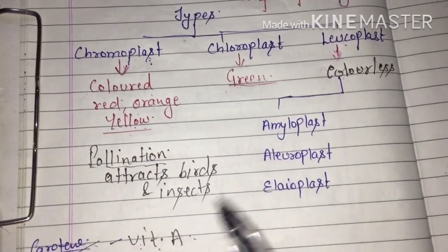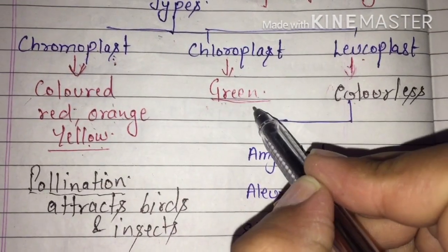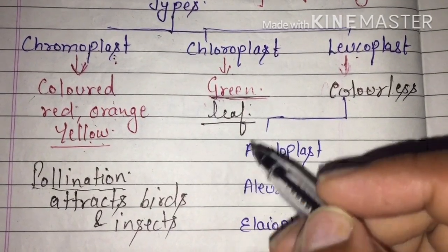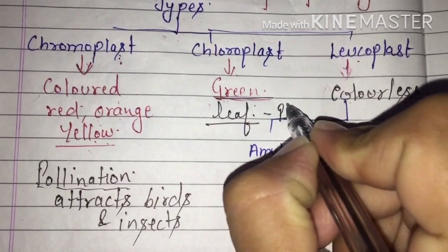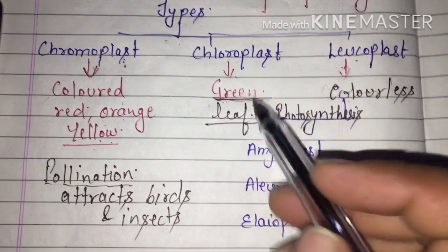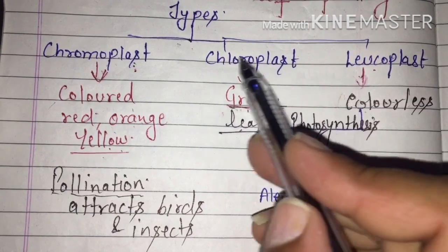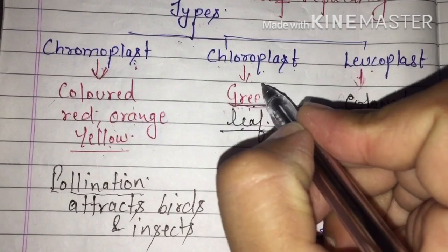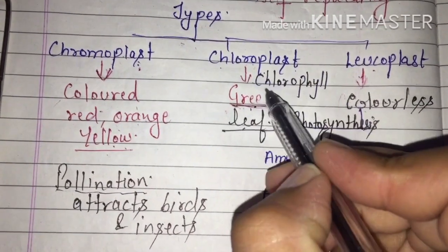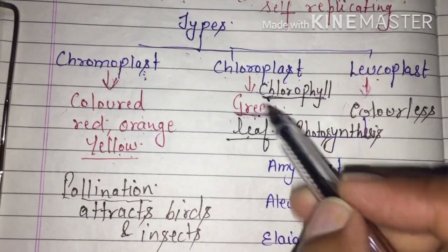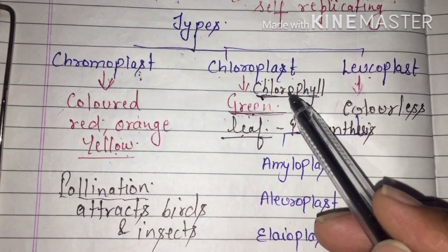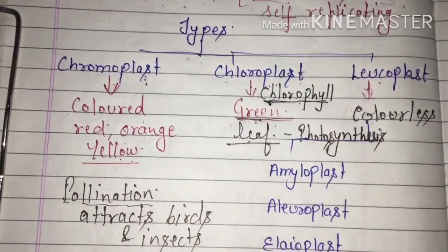Next is chloroplast. The green color is mainly seen in leaves. Green leaves perform photosynthesis, so the plastids that help a plant make food are the chloroplasts. This green color of the leaf is due to chlorophyll. Chloroplast contains chlorophyll, and chlorophyll absorbs sunlight. The plant can then perform photosynthesis with the help of this sunlight.